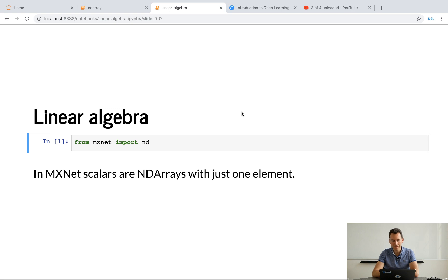If you want to look at them in slide form, you need the reveal plugin. Anyway, the first thing we need to do is we need to import ndarray, which is the array data type of MXNet. So from MXNet import nd. That's all you need.